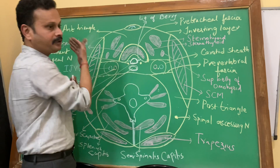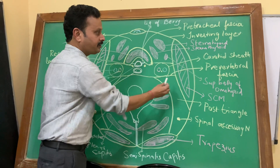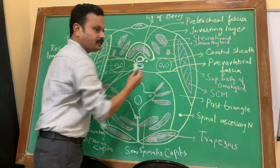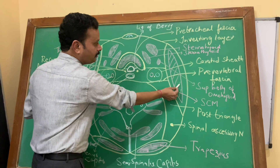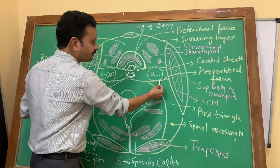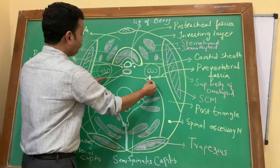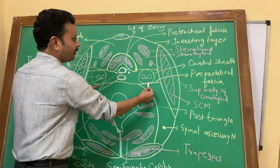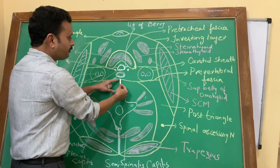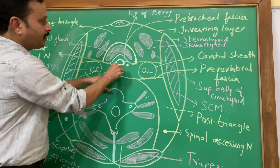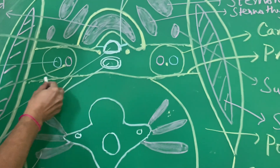The transverse extent of the pre-vertebral fascia: it arises from the investing layer of deep cervical fascia, under cover of the sternocleidomastoid muscle. After arising from the investing layer, the fascia passes medially on either side, forming the posterior wall of the carotid sheath. It then passes further medially to meet with a similar fascia of the opposite side, behind the pharynx or behind the esophagus.